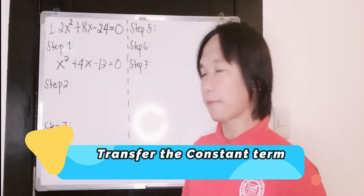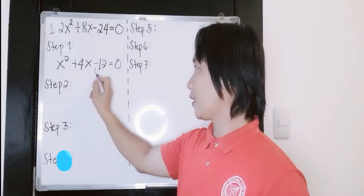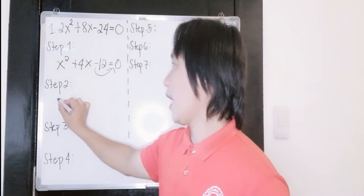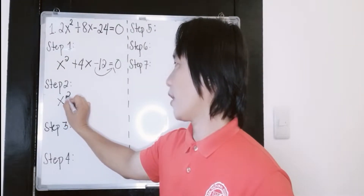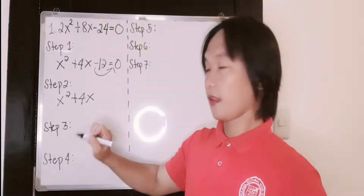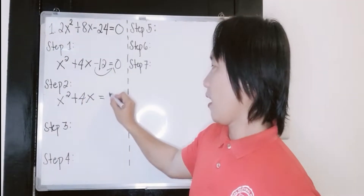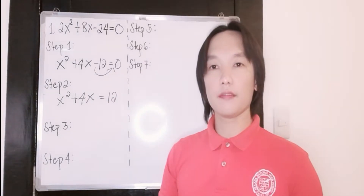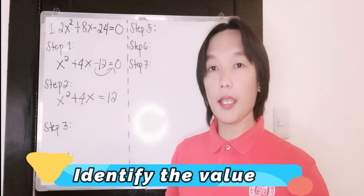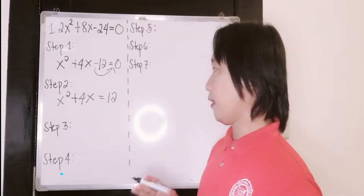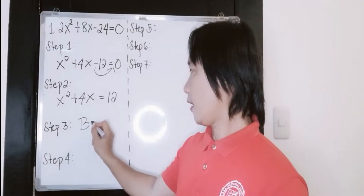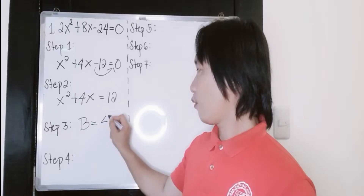The second step is to transfer your constant term to the right side of the equation. So we will have x squared plus 4x, and this will be equal to positive 12. The third step is to identify the value of our b. As you can see, our b is equal to 4.